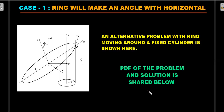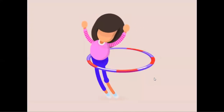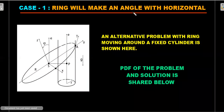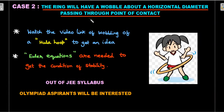One thing is certain — the ring cannot stay horizontal. The second thing that can happen: in real-life hula hoop videos, there's an illusion that the ring stays almost horizontal. What's actually happening is a wobble about a horizontal diameter passing through the point of contact. As the finger moves around, the ring almost stays horizontal but has another angular velocity about a horizontal diameter — that's called a wobble. It's an omega perpendicular to the other omega.